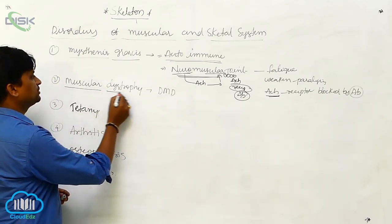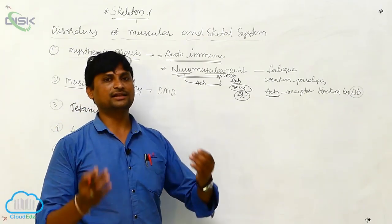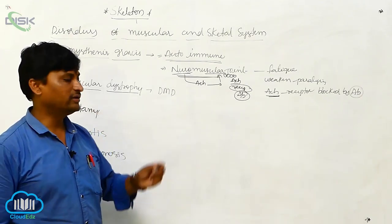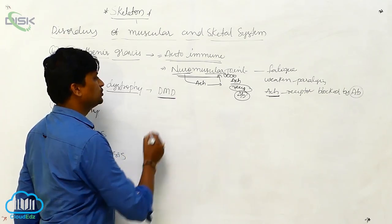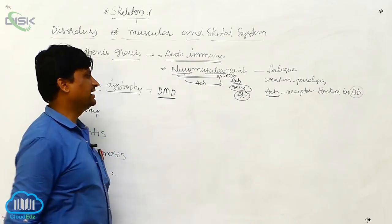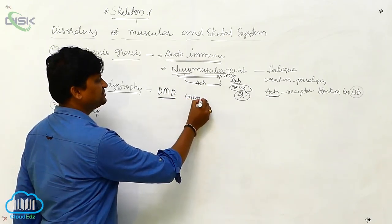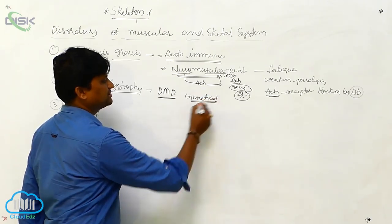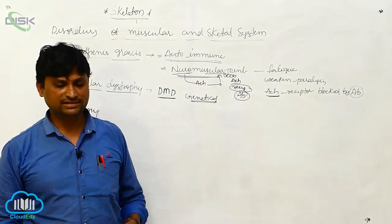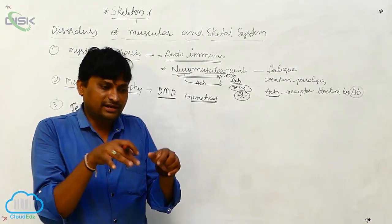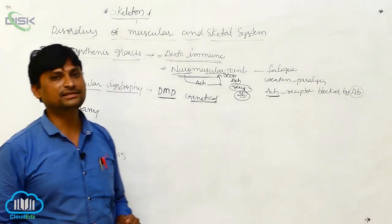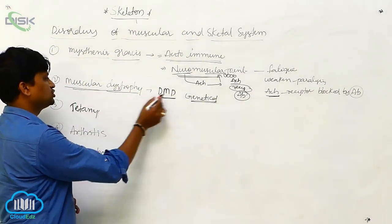The second disorder is muscular dystrophy, where muscles undergo disintegration and degradation. One type is Duchenne muscular dystrophy, which is a genetic disorder. Around 18 years of age, the muscles automatically go into destruction. The body becomes very rigid and weakened, a bow shape of the body may form, and all the muscles degenerate.